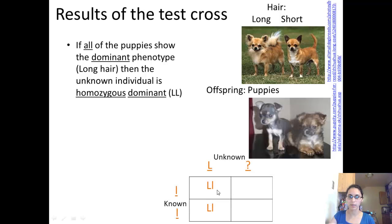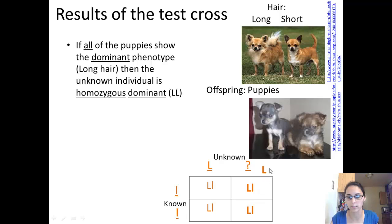How do we know this? If we use the Punnett square and all these offspring show the dominant phenotype, then we know the unknown parent also carries a dominant allele — because there are no recessive puppies, no short-haired puppies. So if all the puppies were long-haired, that confirms the unknown parent is homozygous dominant.